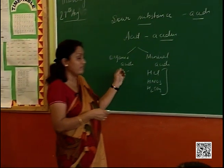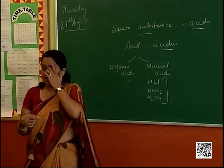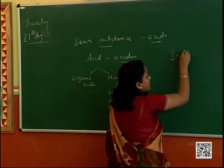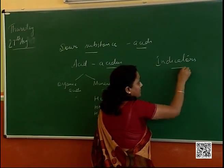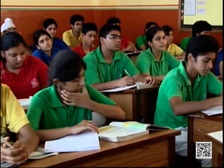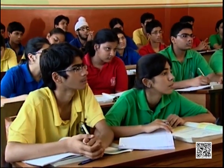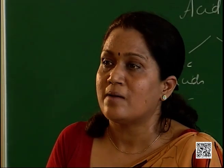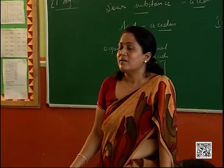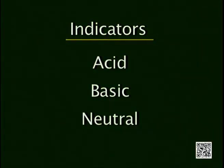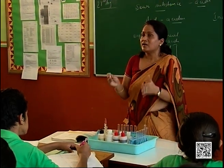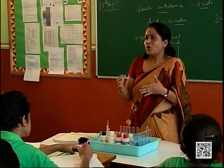To classify substances on the basis of their acidic or basic nature, we use a certain class of substances called indicators. What is the need of these indicators? To differentiate — if I want to know the chemical nature of a substance around me, I can't taste it, because that unknown sample might be harmful. So we use certain substances which help us identify the chemical nature of material, whether it's acidic, basic, or neutral. Indicators indicate what the chemical nature of a substance is.